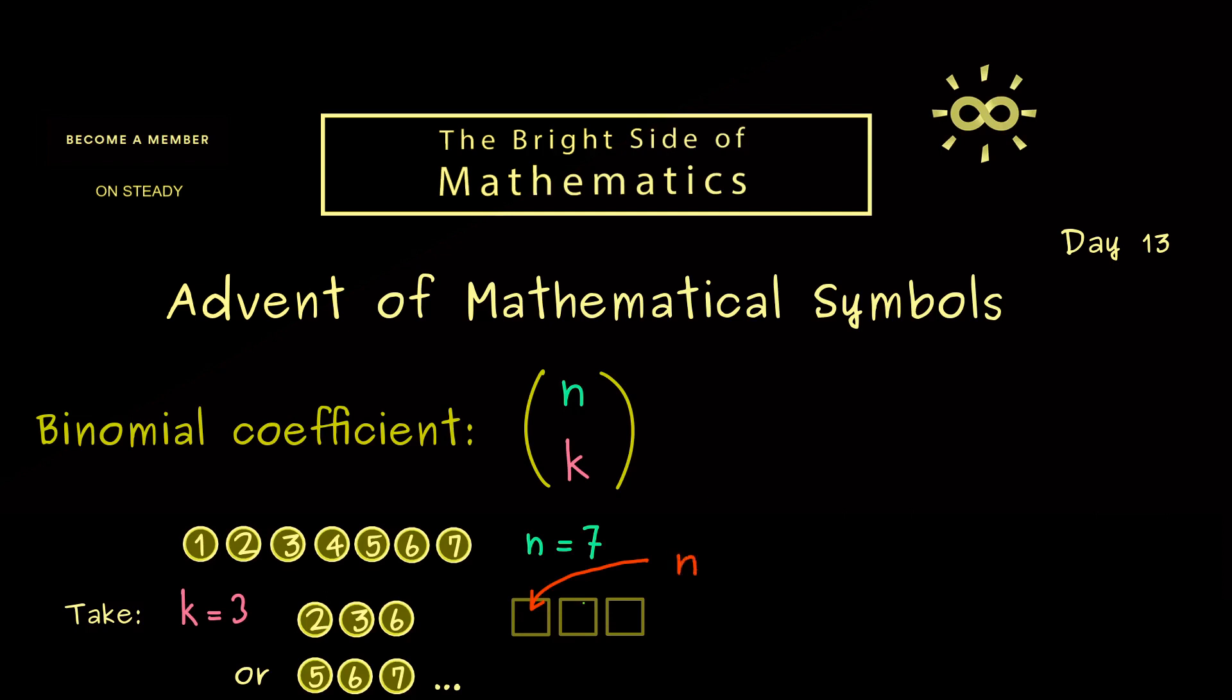Then for the second position we take out another ball. However, now the first ball is already gone, so we have exactly n-1 numbers. And finally for the third position, n-2 numbers remain. Now multiplying these numbers gives us exactly the possibilities for filling in these slots with the balls here.